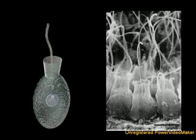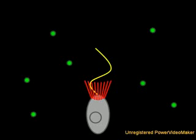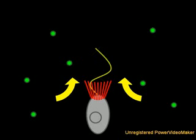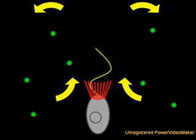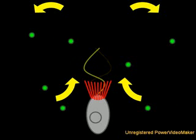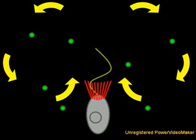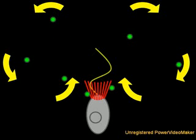On the left is a free-living, single-celled organism known as a choanoflagellate. On the right is a cross-section through a sponge showing the feeding cells, or choanocytes, that line the inner cavity. Both cells feed by generating water currents with their flagella, allowing them to capture bacteria on their collar of microvilli, where they consume them.